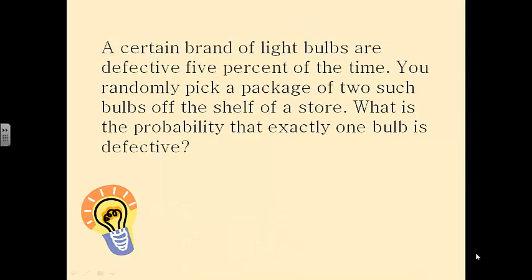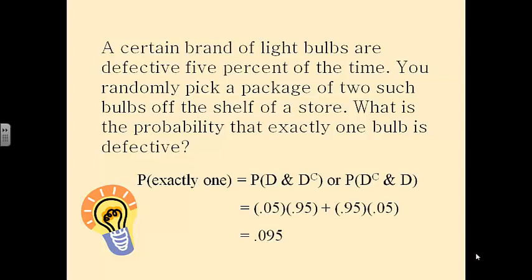Back to the light bulb problem — defective 5% of the time, picking a package of two. What is the probability that exactly one bulb is defective? We have two cases: the first bulb is defective and the second is not, or the first is not defective and the second is. So we calculate: 0.05 times 0.95, plus 0.95 times 0.05. Multiply those out, add them up, and you get your probability.